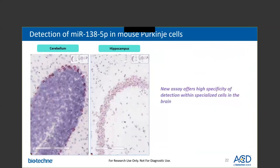The last slide to demonstrate assay specificity looks at the detection of microRNA-138 in mouse brain tissue. This specific microRNA is known to be expressed in Purkinje cells in brain regions such as the cerebellum and hippocampus. This data shows that our new assay offers highly specific detection of targets in specialized cells of the brain.